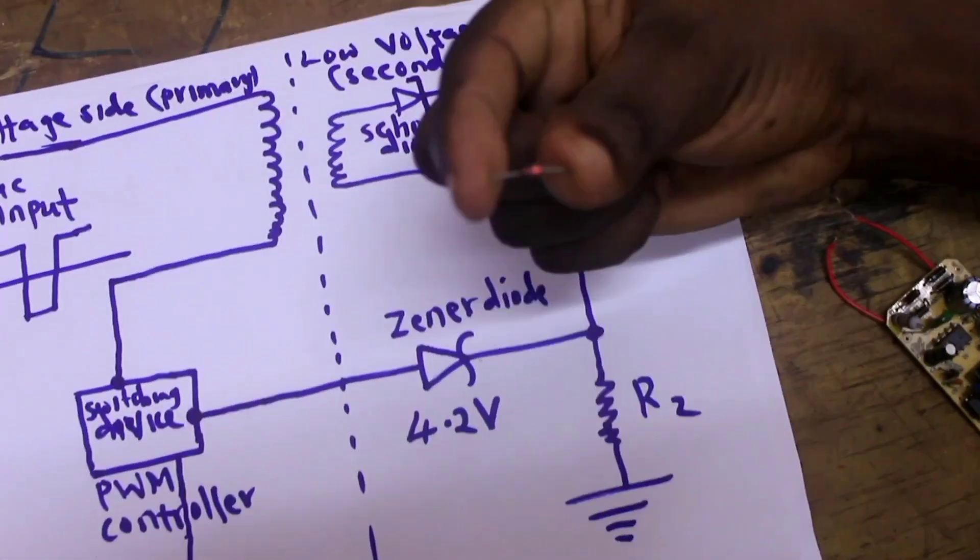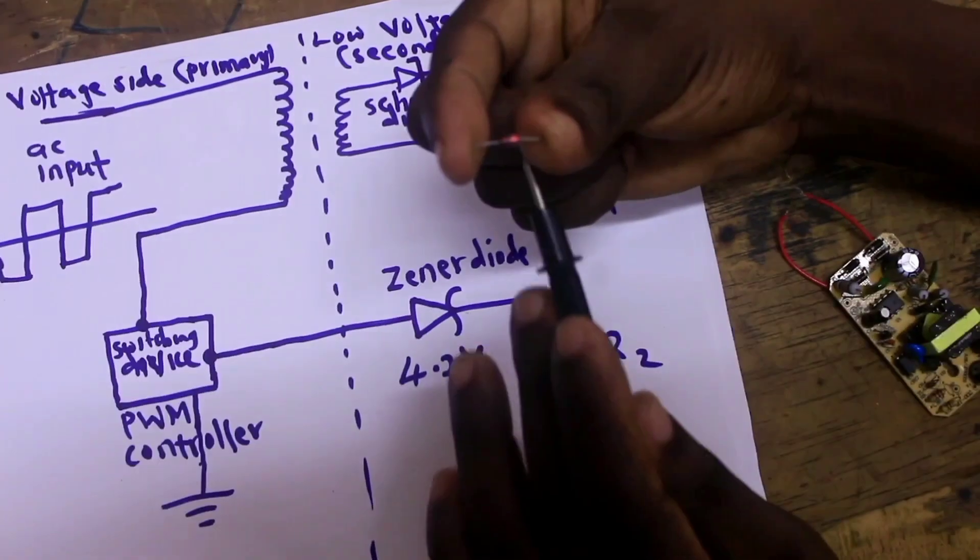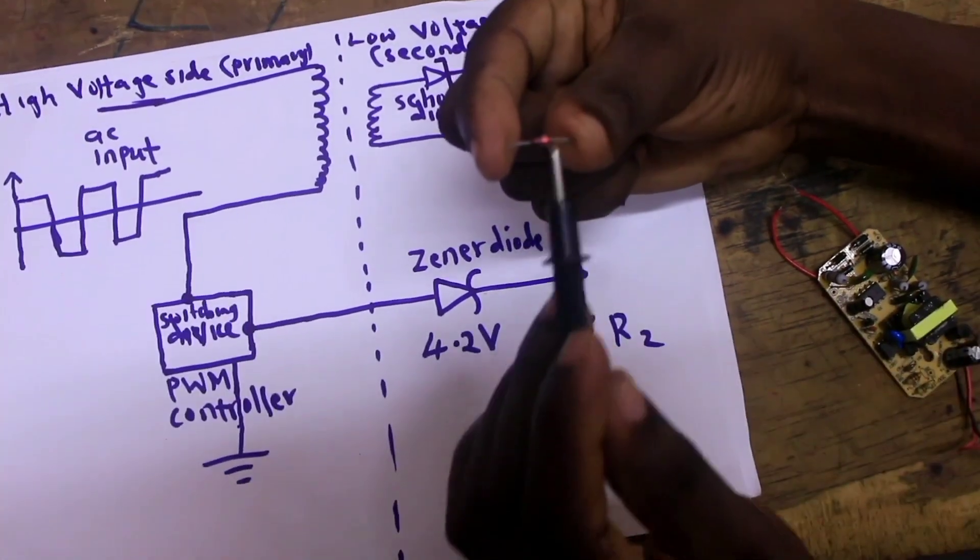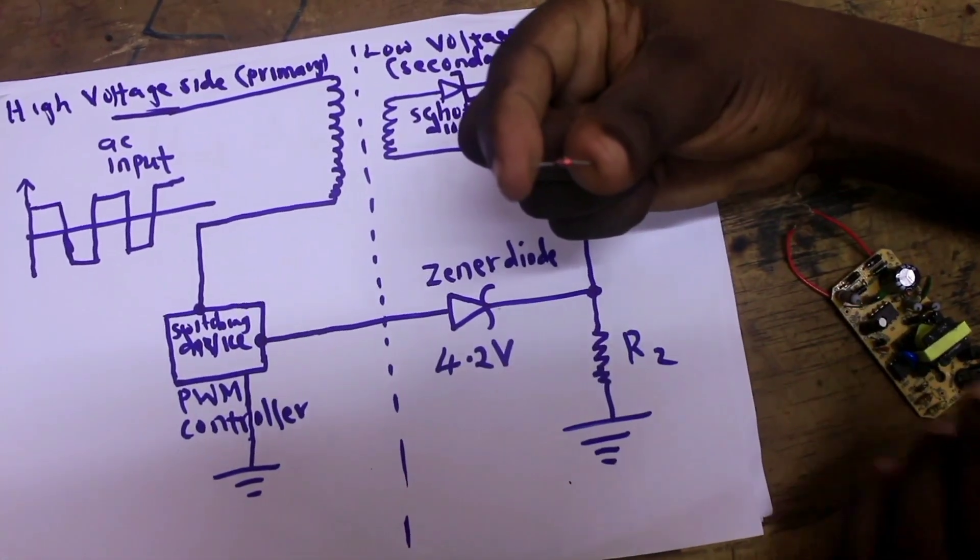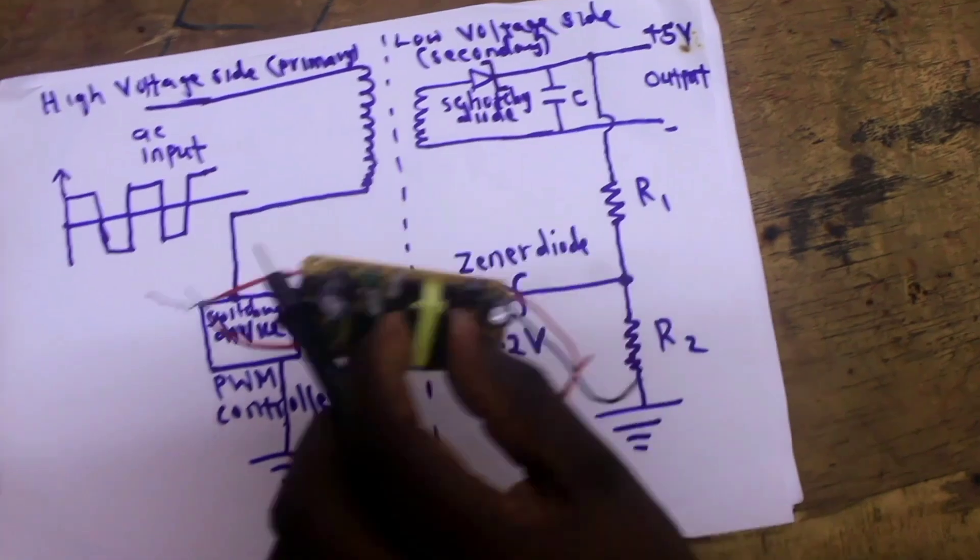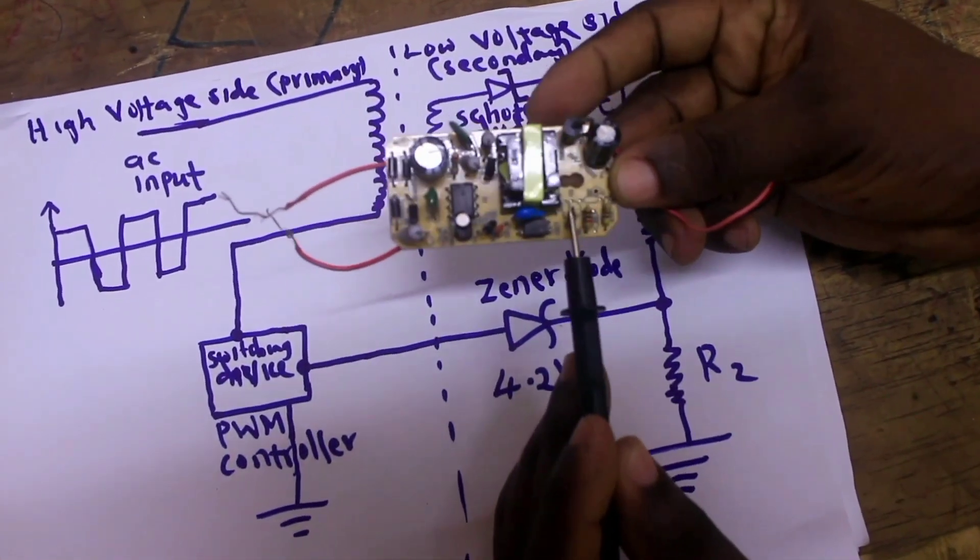Now this Zener is used in an SMPS power supply to regulate the voltage, that is to make sure the voltage at the output remains constant. This is where the Zener diode is used in the power supply.